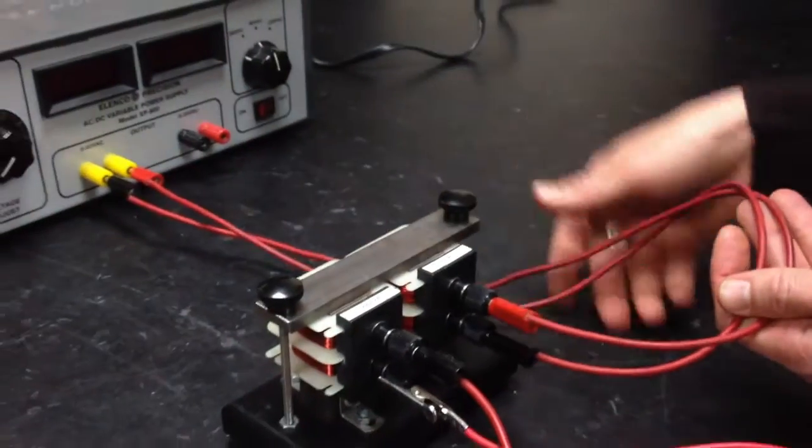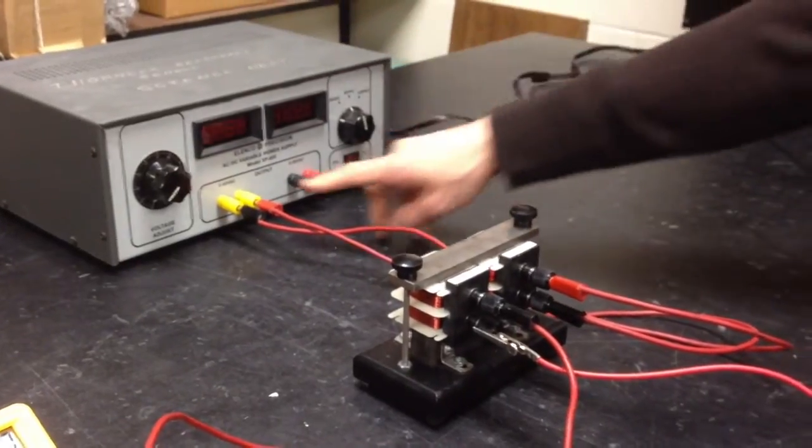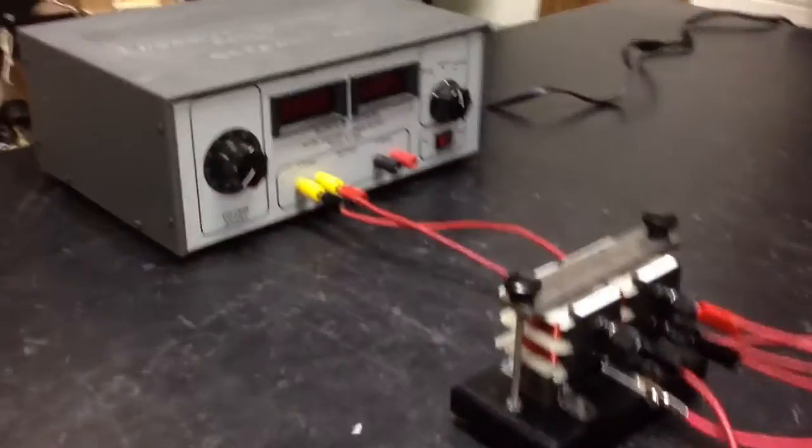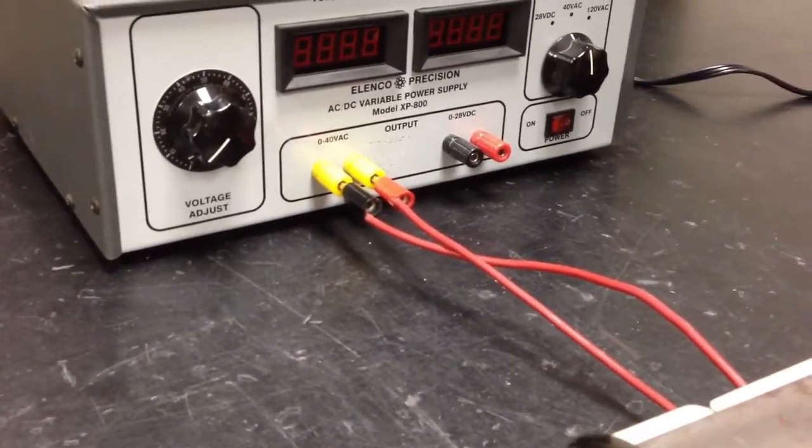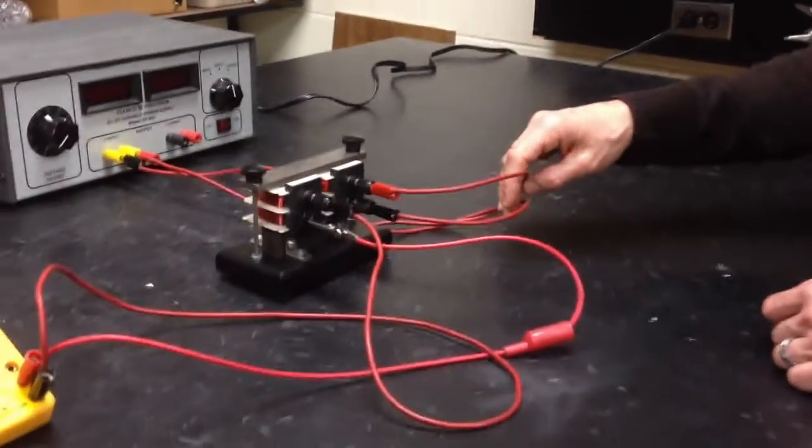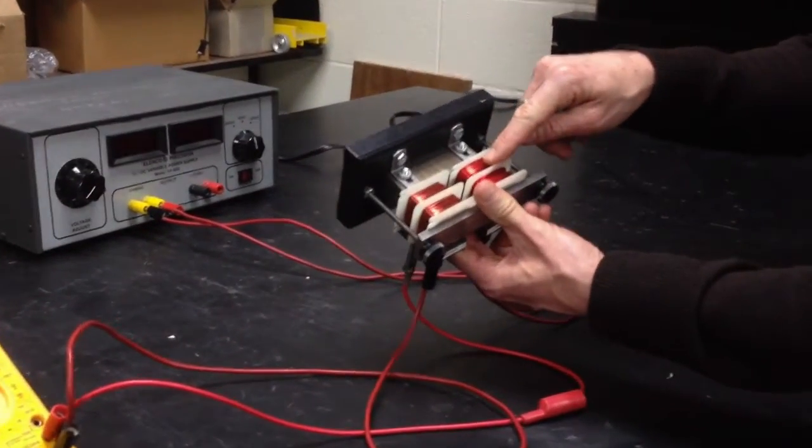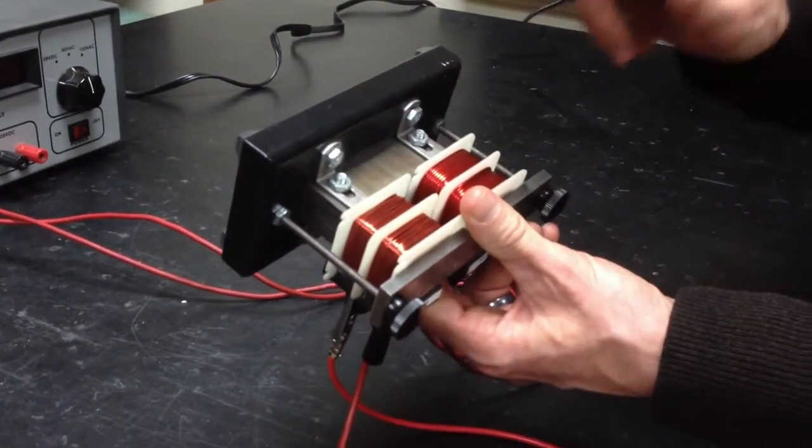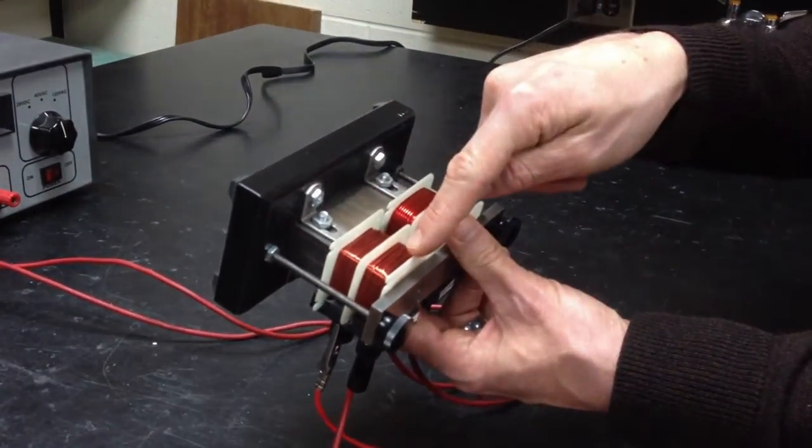This coil I've hooked up to a power supply that's a little bit different than the previous one. This one is an AC power supply. It's going to provide us with alternating current, unlike the other one that had direct current. So this is actually the type of electricity you get out of the hand crank generator that we've been using in class for some of our demonstrations.